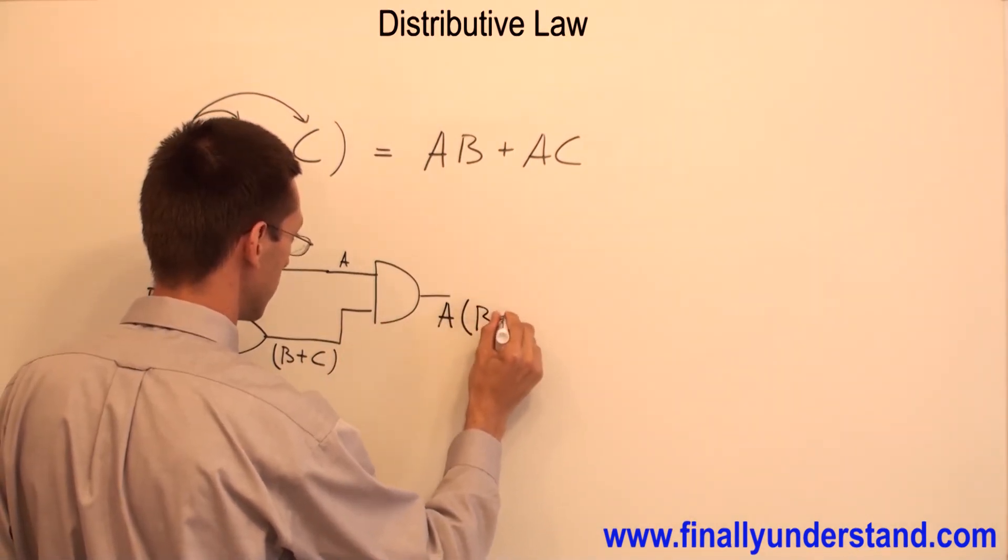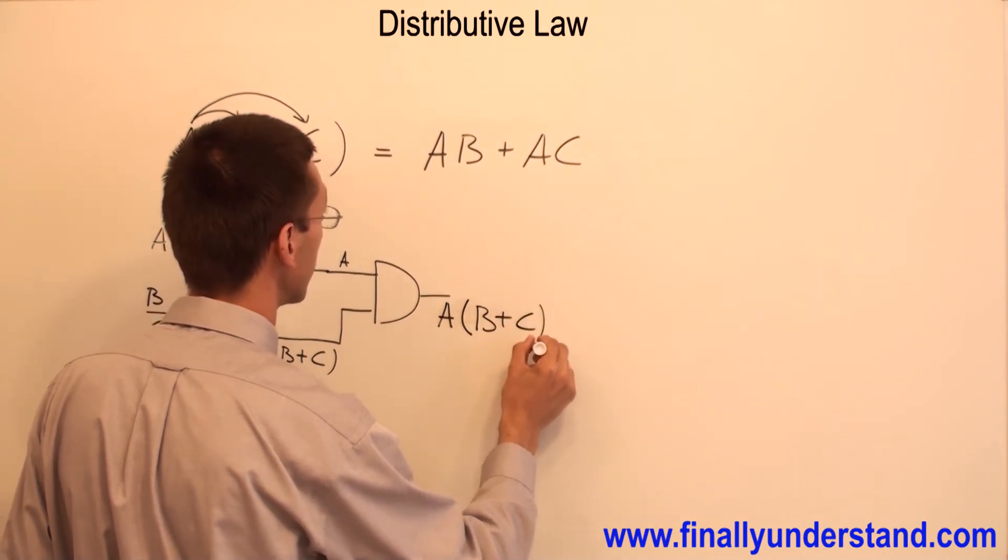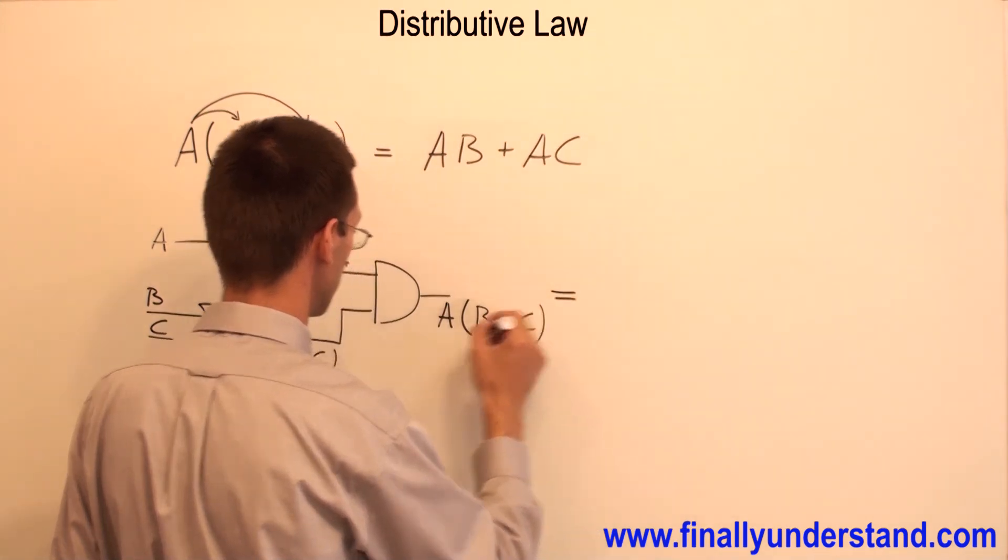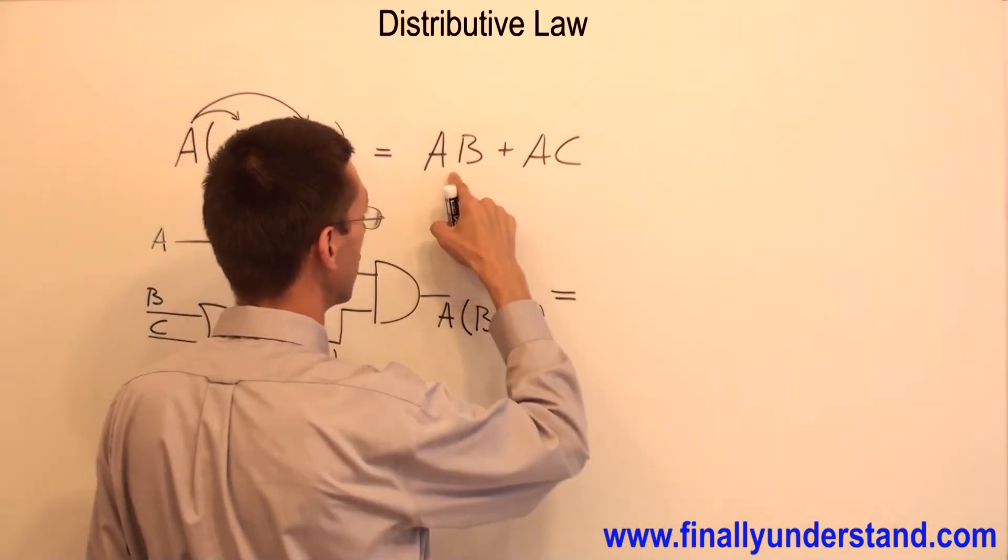And B or C. If you want to implement this function which is equivalent to this one, you are going to have two AND gates.